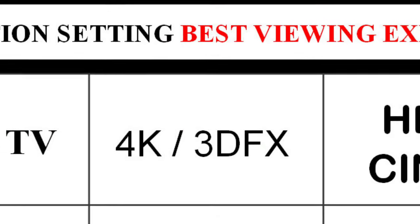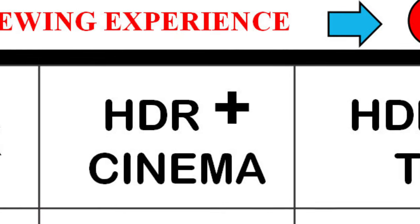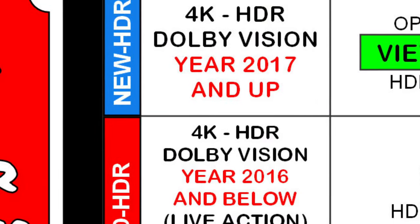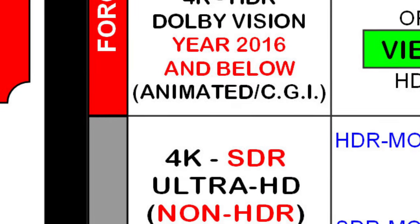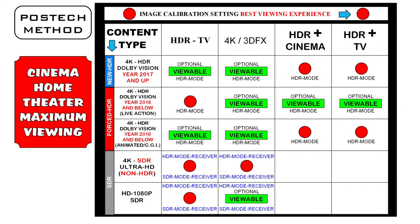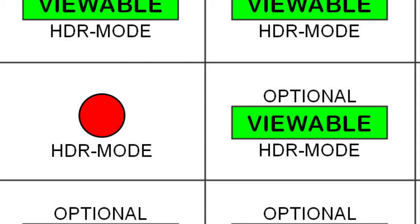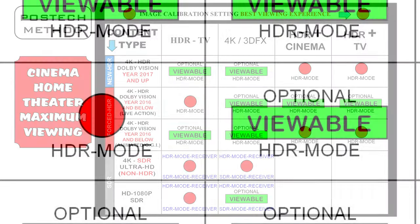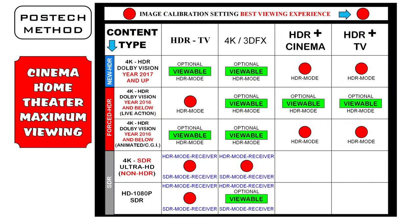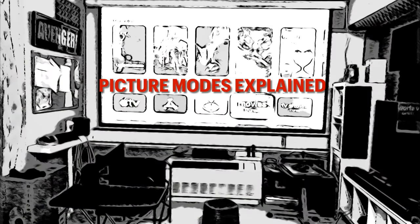In the POST-TECH method, the viewer will often switch between the 4 image settings to view the current market's 5 content types, which can be from a disk or a streaming service. The advantages of the POST-TECH method include having the maximum viewing experience in each type of content, and having the option to view content from best to viewable quality. It also gives the viewer the ability to view a single content multiple times and have different viewing experiences. Additionally, viewers in a household with a home theater may have different preferences when watching content.